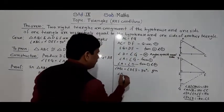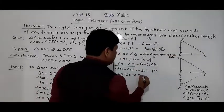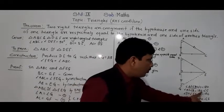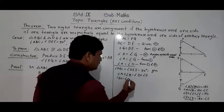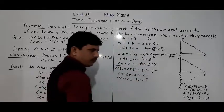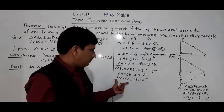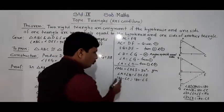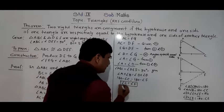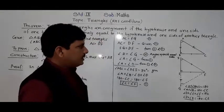Since angle A plus B equals angle D plus E, we have 180 minus angle C equal to 180 minus angle F. Both sides' 180 and minus signs cancel, so finally angle C is equal to angle F. This is result five.